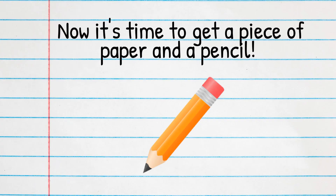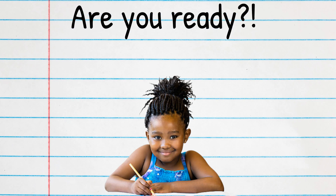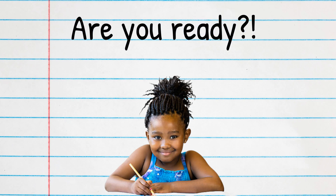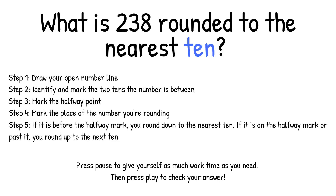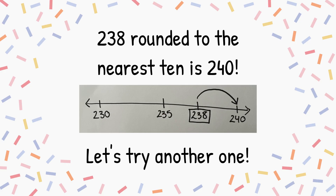Now it's time to get a piece of paper and a pencil. Are you ready? Let's practice. What is 238 rounded to the nearest 10? Follow all the steps. Press pause to give yourself as much work time as you need, then press play to check your answer. 238 rounded to the nearest 10 is 240. Let's try another one.